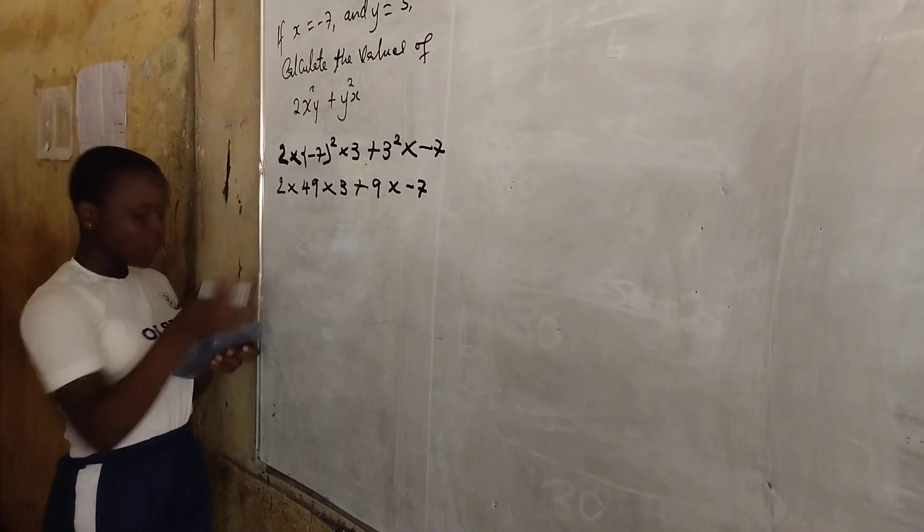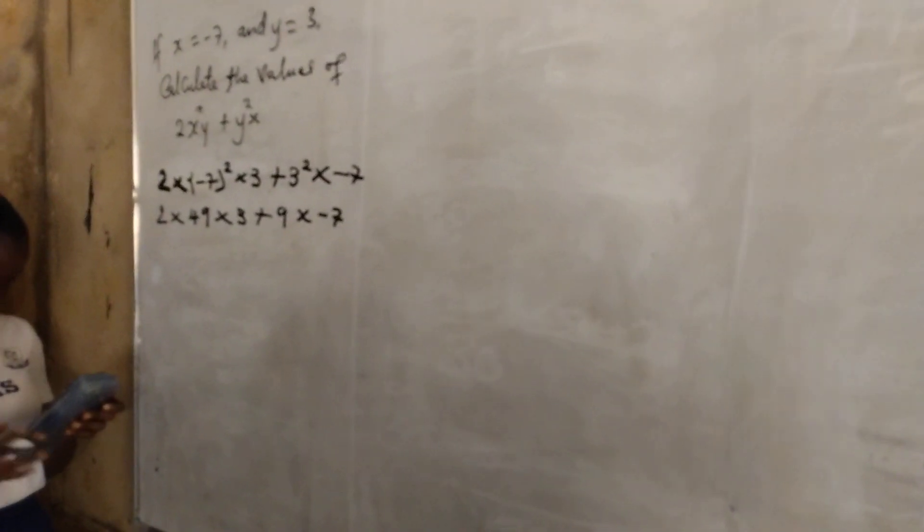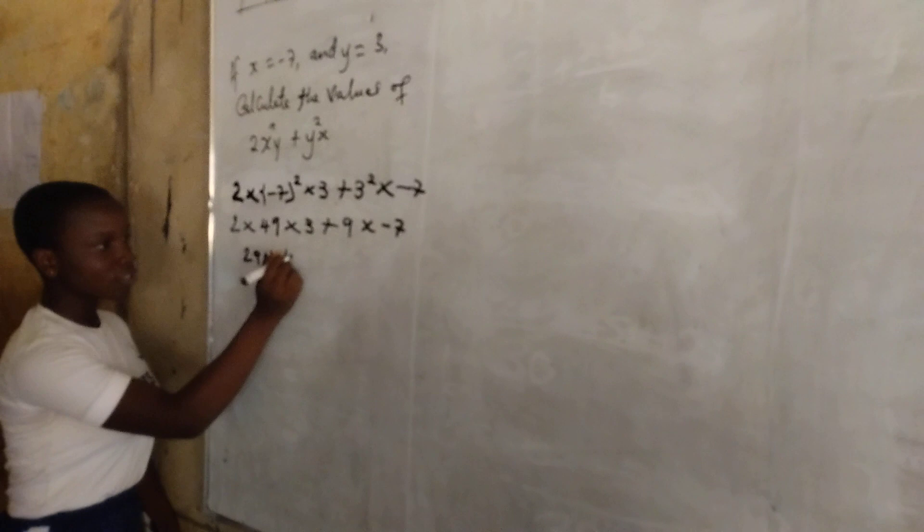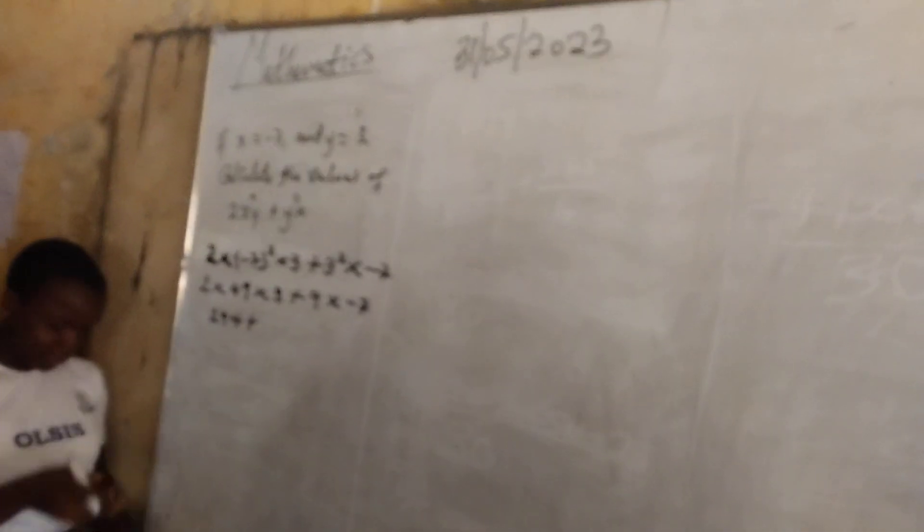So 2 times 49 times 3 gives 294. Plus 9 times minus 7.